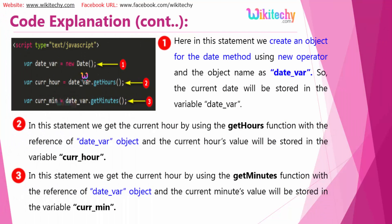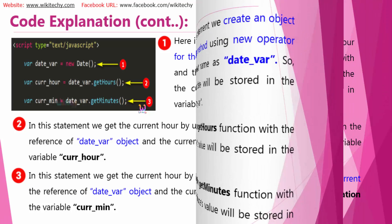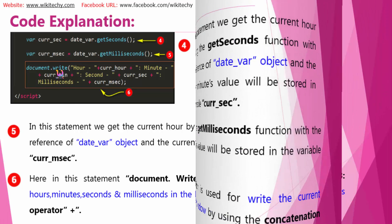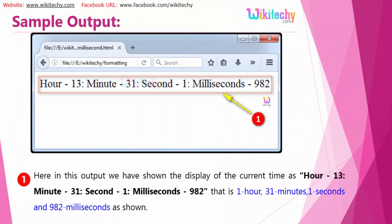Here is the code explanation — getting the date, getting the hour, getting the minute. This line will take care of getting the second and millisecond, and here is the overall output printed via the document.write method. You can open it in the browser.